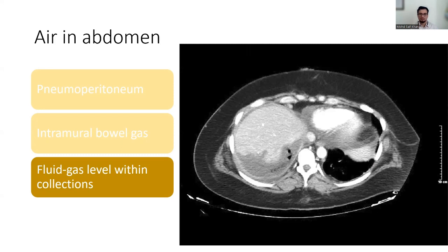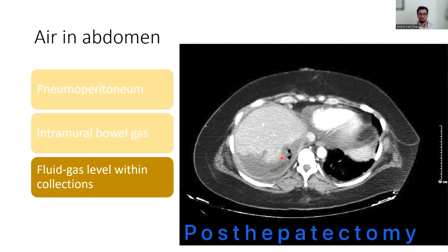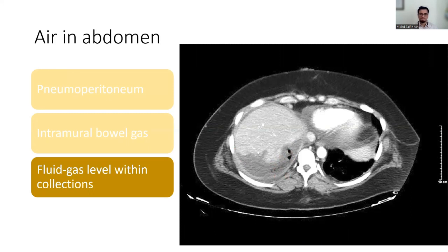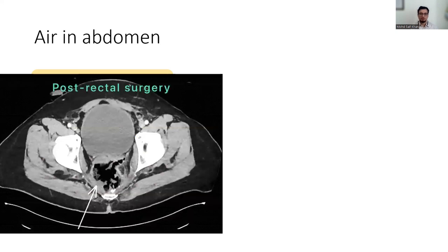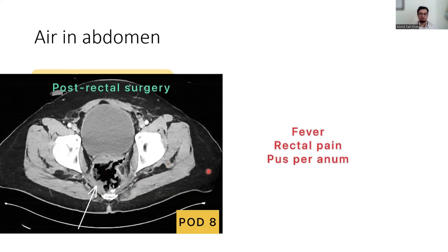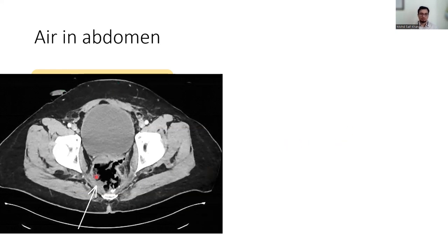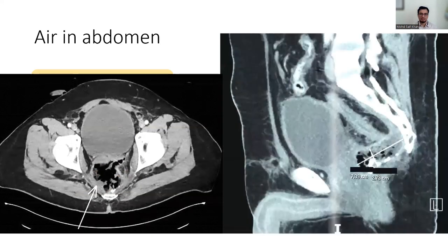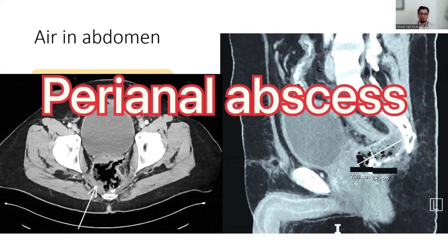In this CT scan there is a hypodensity in the lower part of the liver with air pockets — the patient had a history of hepatectomy and underwent percutaneous drainage whose culture was negative. Another CT scan done on post-operative day 8, in a patient with fever, rectal pain, and purulent anal discharge following rectal surgery, shows a lot of air and collection in the perianal region — this is a large pelvic collection with air pockets, consistent with a perianal or pelvic abscess.